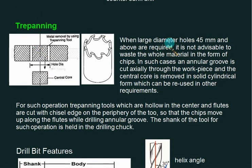In the trepanning operation, we are making large holes of diameter more than 45 mm. In this case, we have an annular cut. This type of tool is used here, and the center plate can be saved, reducing MRR.